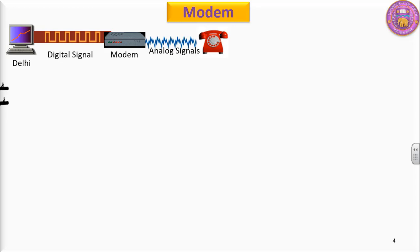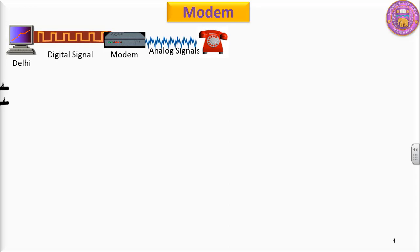We know that the telephone carries voice signals which are in the form of analog signals. Suppose we want to send a signal from Delhi to Mumbai — we need to lay down cables from Delhi to Mumbai. We started thinking: are there already laid-down cables from Delhi to Mumbai? If so, we can make use of those already laid-down telephone wires.